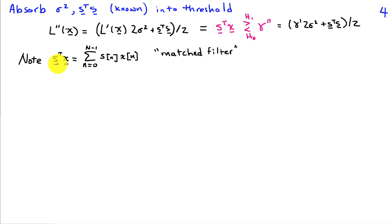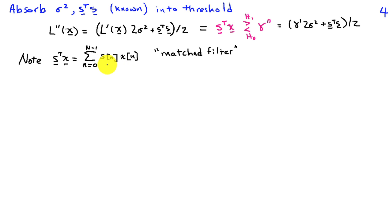This test statistic S^T X is called a matched filter. In signal notation, S^T X is just the sum from n equals 0 to N minus 1 of S(n) times X(n). We've filtered our observation X with a signal that matches the signal we're trying to detect. This doesn't exactly look like a convolution filter, but you can show that this is the output of a matched filter at a particular instant in time.